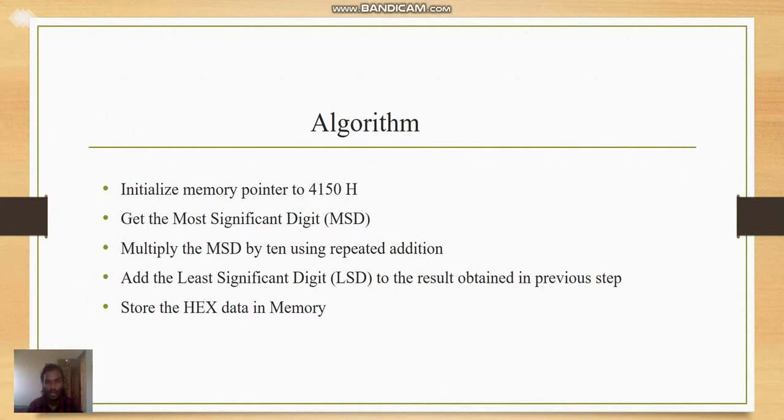Now, what is our aim? We need to convert BCD to hex. For that, let us take a simple example of a two-digit number. So, a two-digit decimal number which will be in the form of BCD, we need to convert it into hexadecimal number.